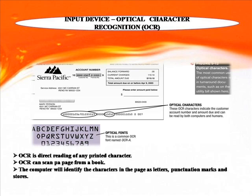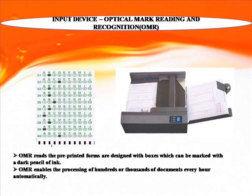Optical Character Recognition (OCR): OCR directly reads any printed character and scans pages from a book. The computer identifies the characters in the page as letters, punctuation marks and stores them. Optical Mark Reading and Recognition (OMR): OMR reads pre-printed forms designed with boxes which can be marked with a dark pencil or ink. OMR enables the processing of hundreds or thousands of documents every hour automatically.